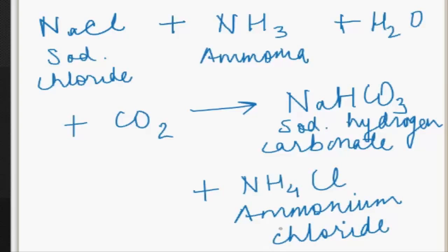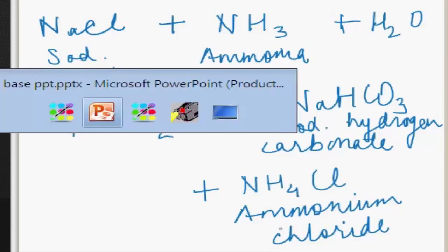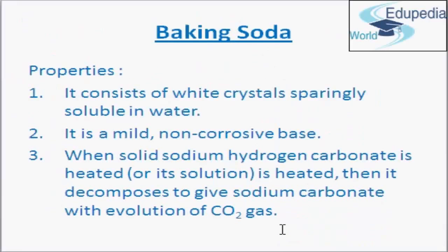So this is the chemical reaction by which sodium hydrogen carbonate is produced. Now, properties of baking soda: sodium hydrogen carbonate consists of white crystals which are sparingly soluble in water. It is a mild non-corrosive base. The solution of sodium hydrogen carbonate in water is mildly alkaline.